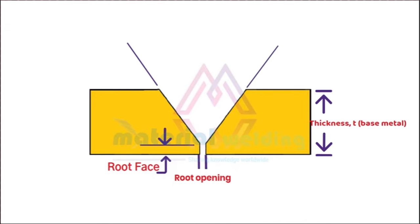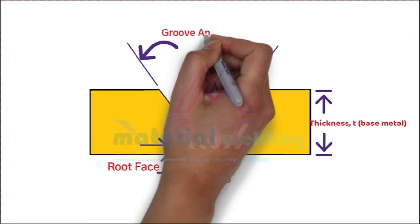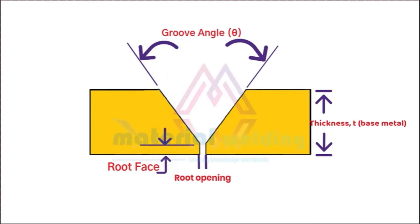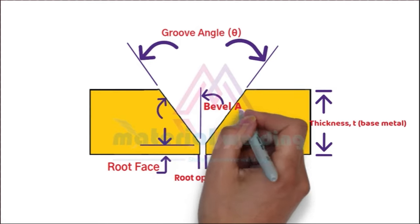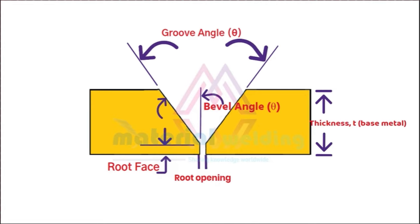When both plates are tack welded, the total angle shown here is called groove angle or included angle. The angle for a single plate is called bevel angle, and the tapered area is called the bevel face on which the weld is deposited.